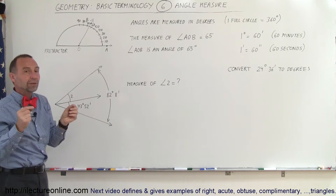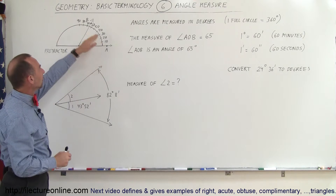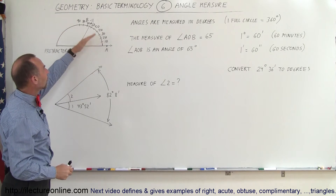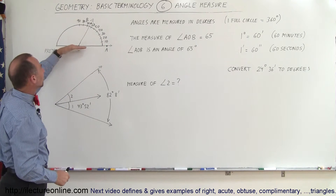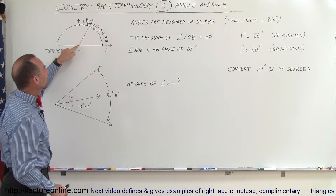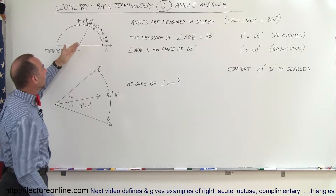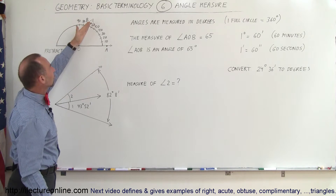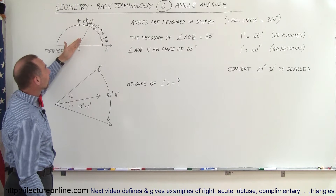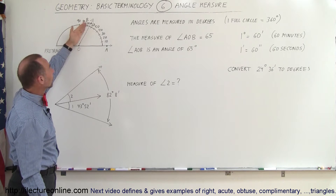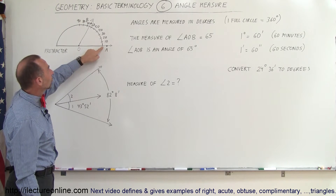A protractor is typically made out of clear plastic. We have numbers on it — the numbers indicate degrees. We put the bottom of the protractor on one of the rays of the angle and then we look to see where the other ray, the other side of the angle, meets the protractor.